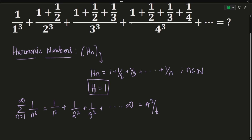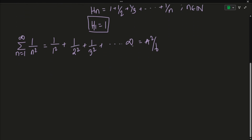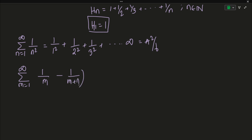First, we want to see how harmonic numbers can be represented differently. There is a better way of getting harmonic sums. What we are going to calculate is the following sum: the summation of 1/m minus 1/(m+n), where n is a natural number. This infinite sum should remind you of a telescoping series.